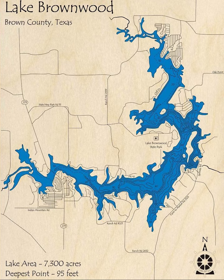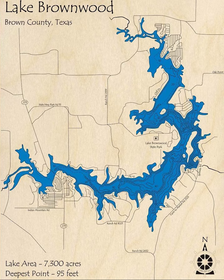After a devastating flood in 1900, the citizens of Brown County created the Brown County Water Improvement District by election in 1926. The Water District acquired the land necessary and built a dam to impound the waters of Pecan Bayou at its confluence with Jim Ned Creek.